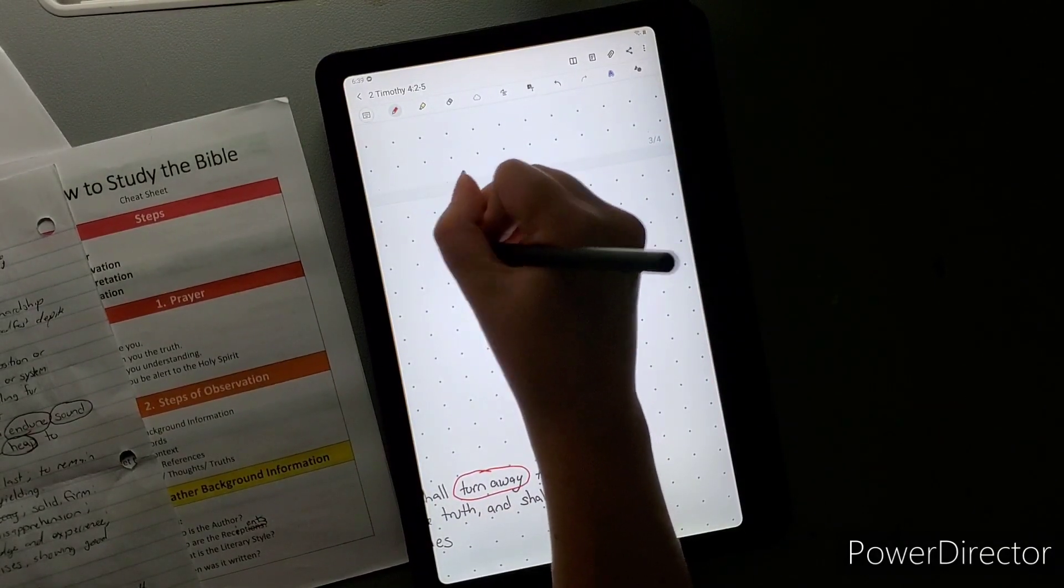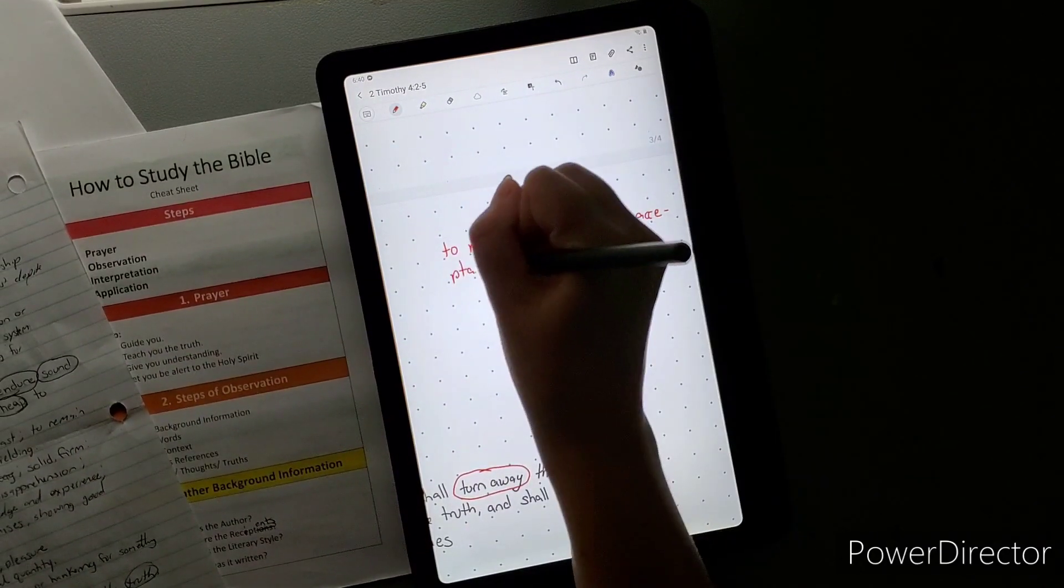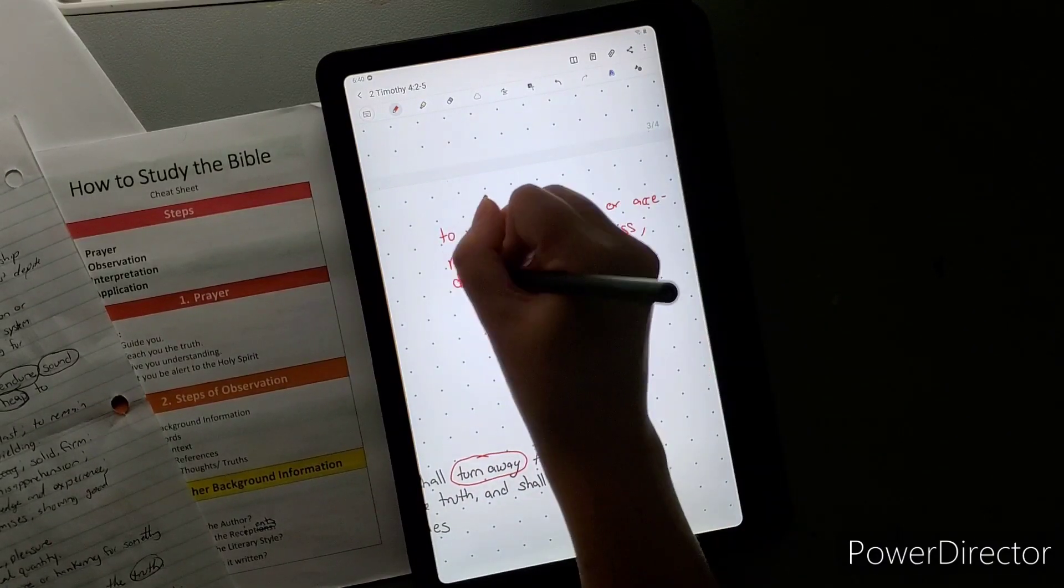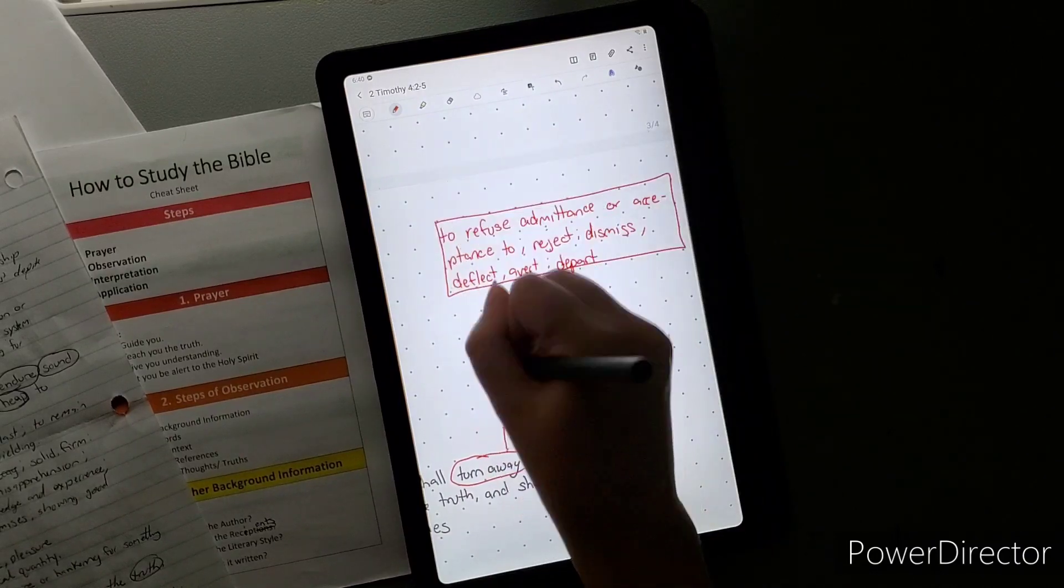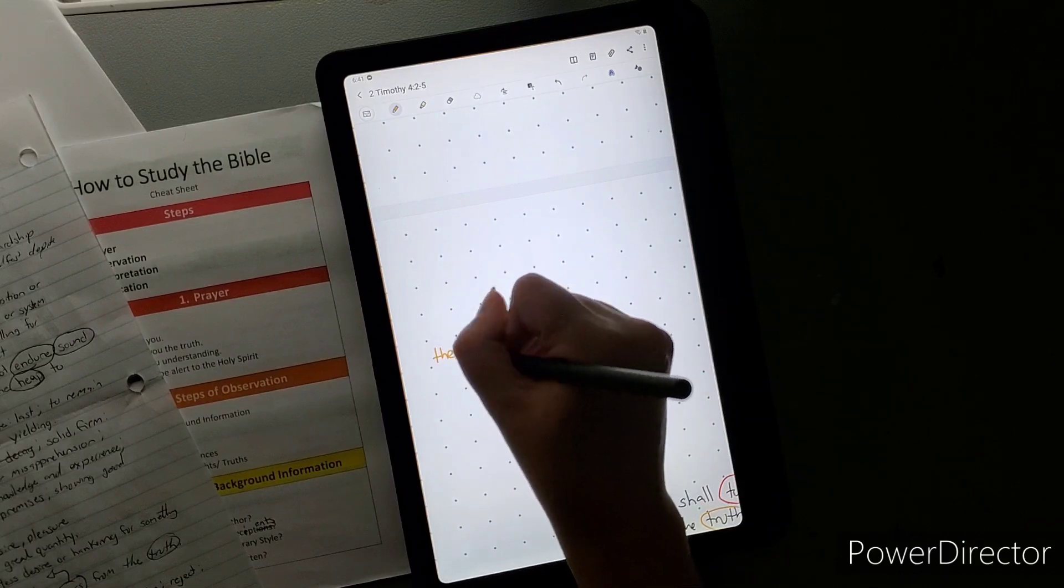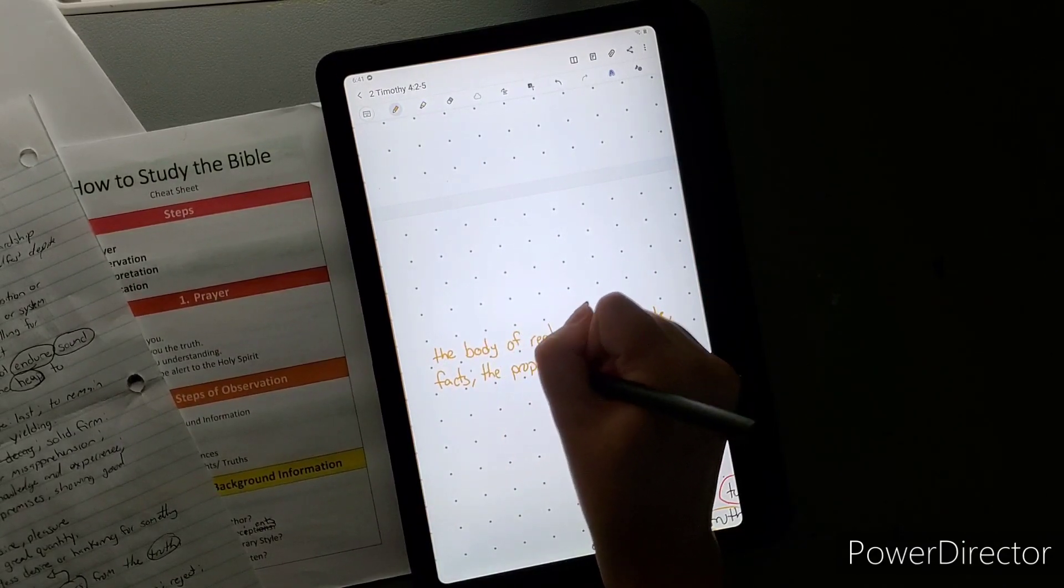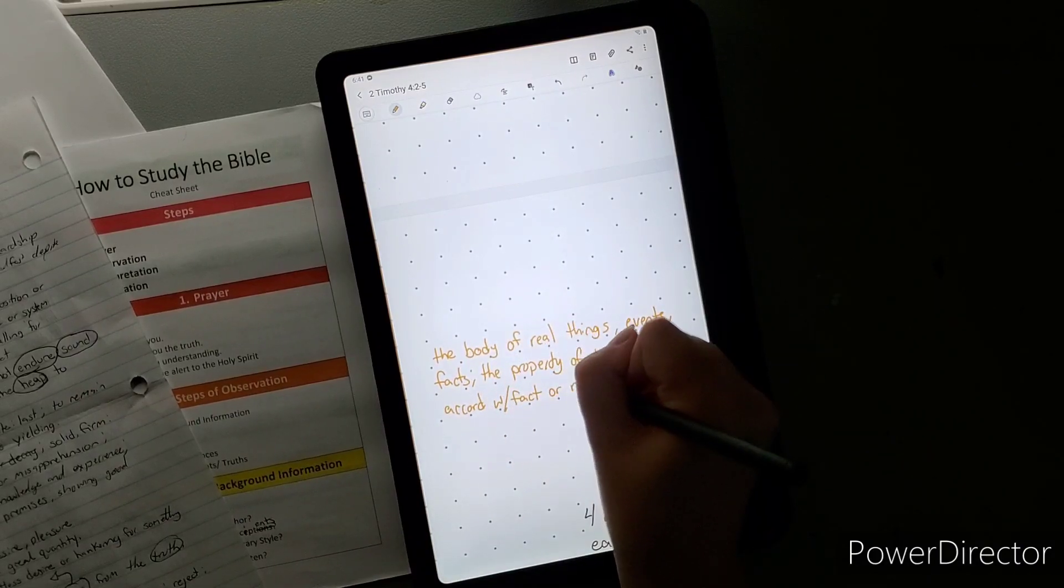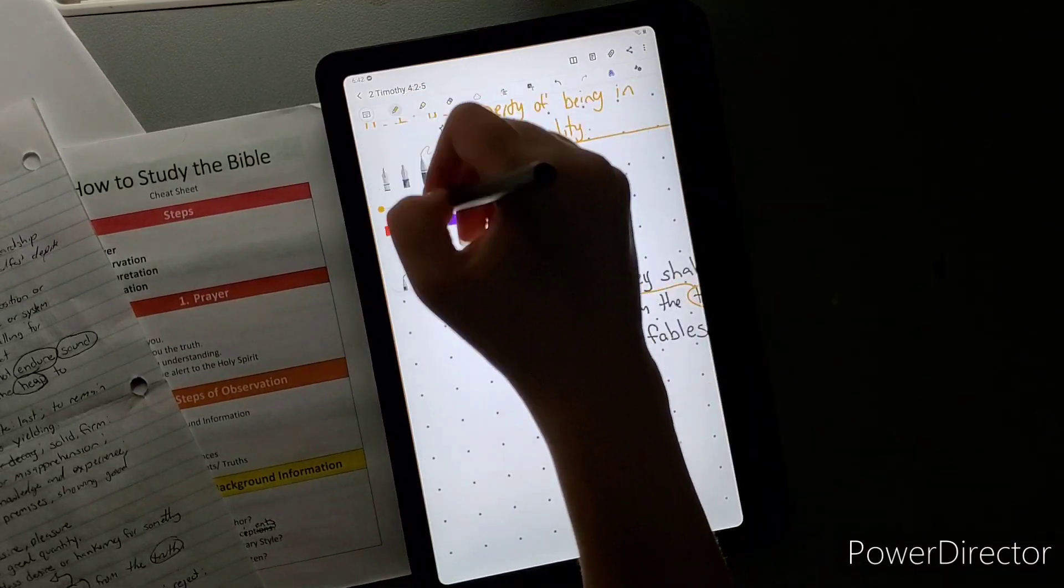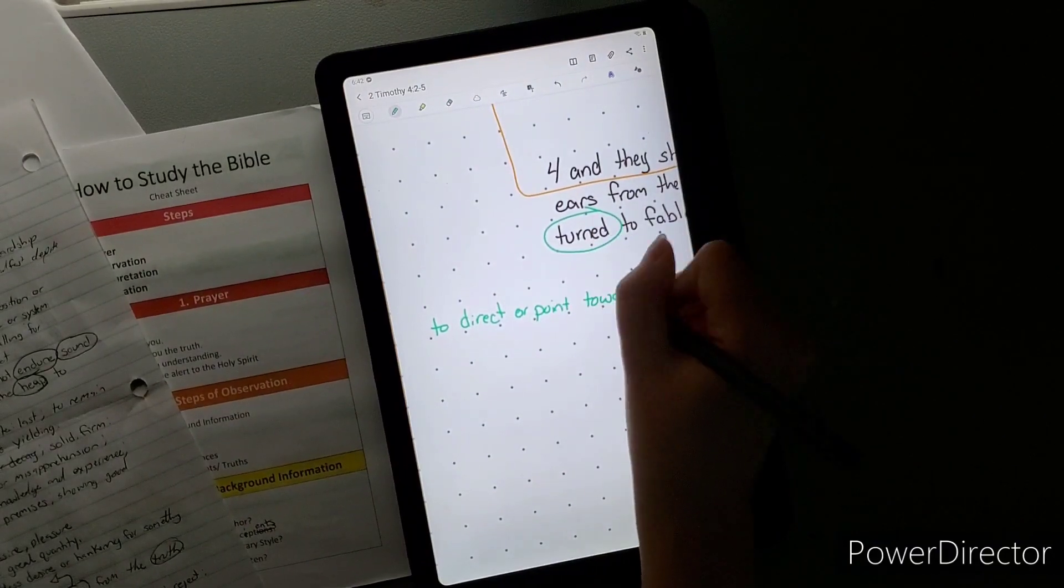They are turned to fables. Turned is to direct or point toward something, toward or away from something, convert. They're fine with fables, which is a fiction, a lie, falsehood. They are fine with being converted to fables or fiction because it suits their needs and their cravings and their sins. Verse five: but watch thou in all things, endure affliction, do the work of evangelists, make full proof of thy ministry.